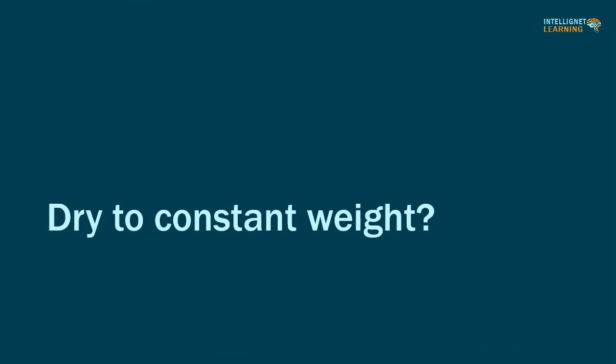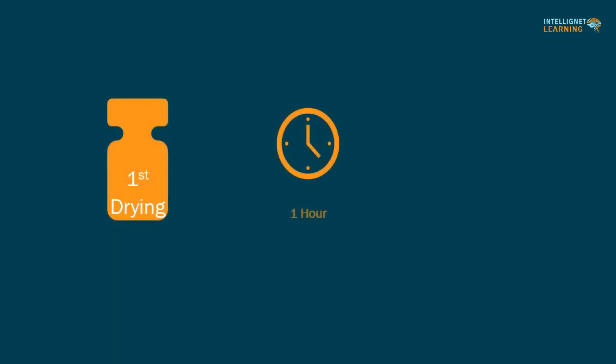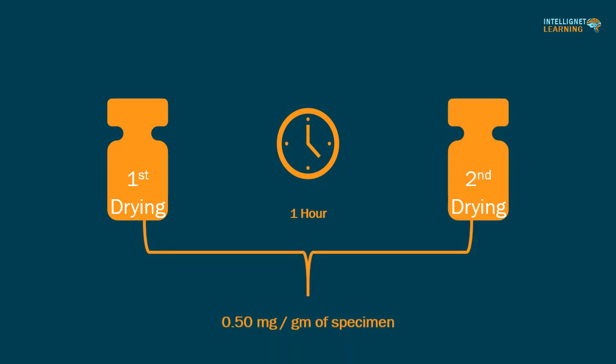Meaning of dry to constant weight: When dry to constant weight is specified in a method of analysis, drying shall be continued until two consecutive weighings do not differ by more than 0.50 milligrams per gram of specimen taken, where the second weighing follows an additional hour of drying.